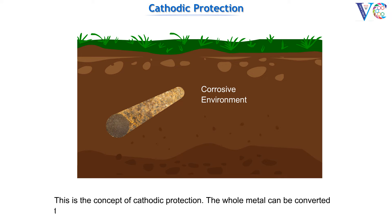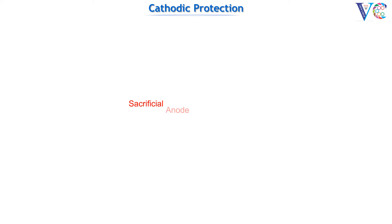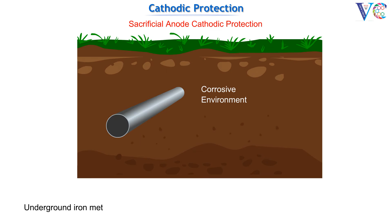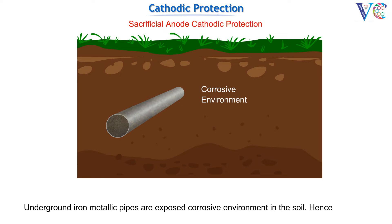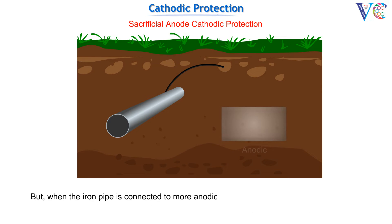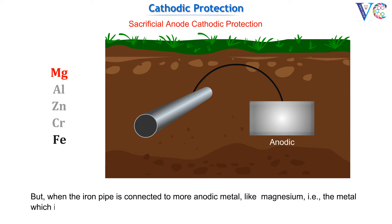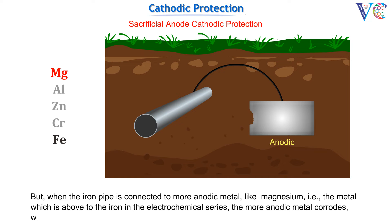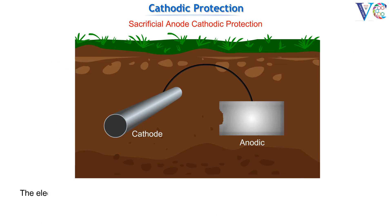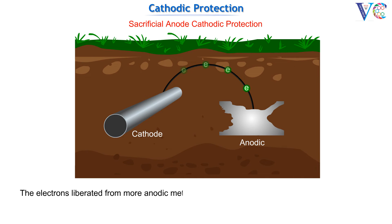The whole metal can be converted to cathode by two methods. Sacrificial Anode Cathodic Protection: Underground iron metallic pipes are exposed to a corrosive environment in the soil, and hence corrode. But when the iron pipe is connected to a more anodic metal, like magnesium — that is, a metal which is above iron in the electrochemical series — the more anodic metal corrodes, while the pipeline will behave as a cathode, and hence be protected.